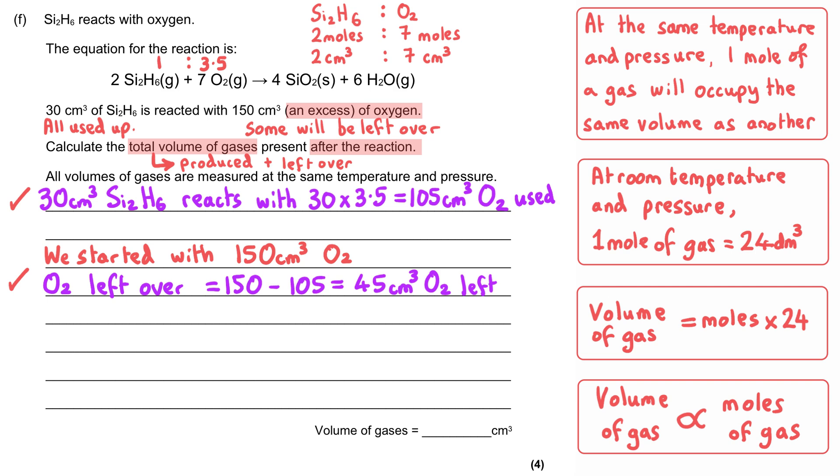To work out the volume of gas produced, we need to look at our two products. The water is shown as being a gas and the SiO2 is shown as being a solid, and so that means we can ignore the silicon dioxide from now on because we are only concerned with the products that are gases.